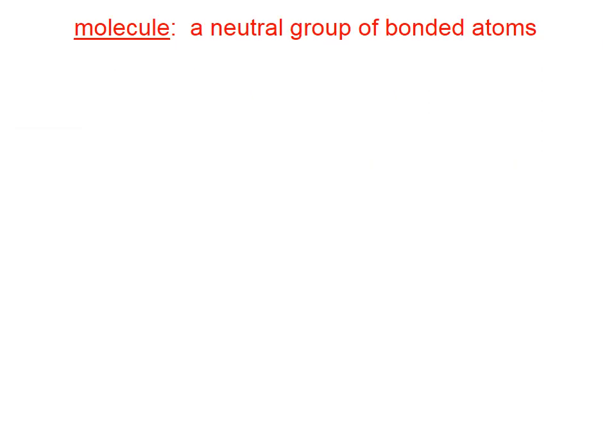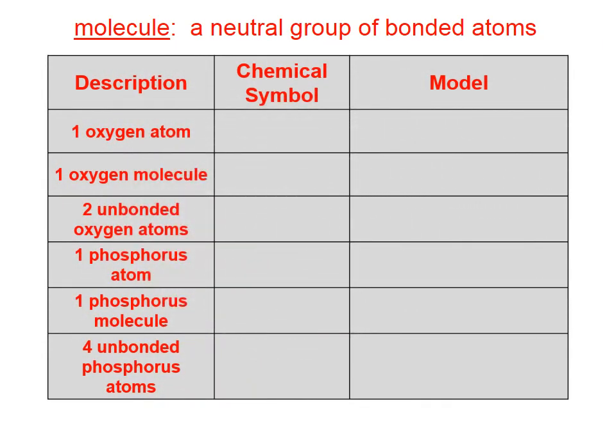A molecule is a neutral group of bonded atoms. If we look at this table, we might symbolize one oxygen atom with the letter O, because O is the symbol for oxygen. And we might model it like a circle. An oxygen molecule, oxygen is a diatomic. So we would write the chemical symbol as O2, and we would model it as two circles touching each other, indicating that they're bonded.